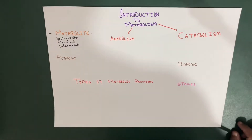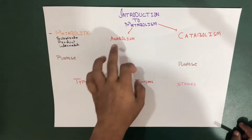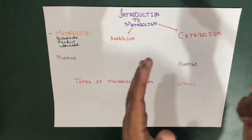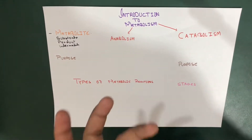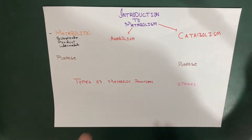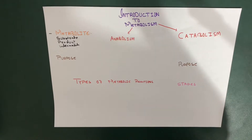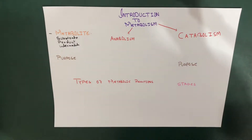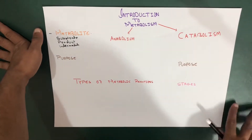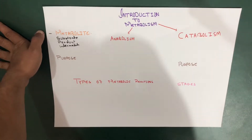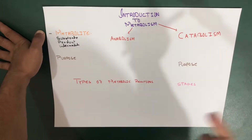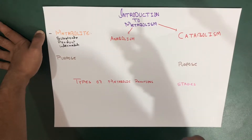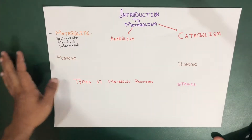Now, besides anabolism and catabolism, we have another branch — we call that particular thing amphibolism. Amphibolism — it's not that necessary, but you have to know the definition. Amphibolism refers to reactions which are both catabolic and anabolic in nature. An example is the Krebs cycle, or TCA cycle — in that cycle, both catabolism and anabolism are going on, so we call that type of reaction amphibolism.